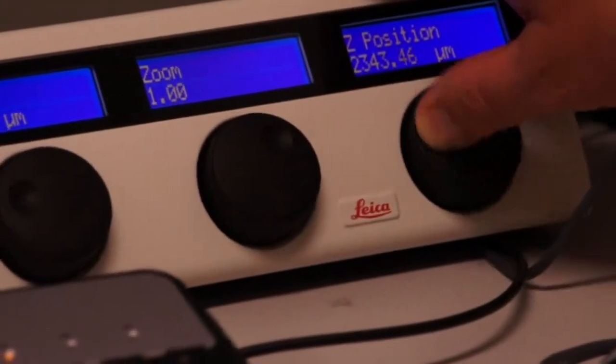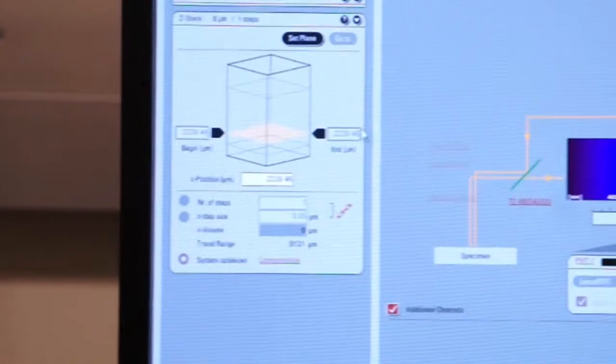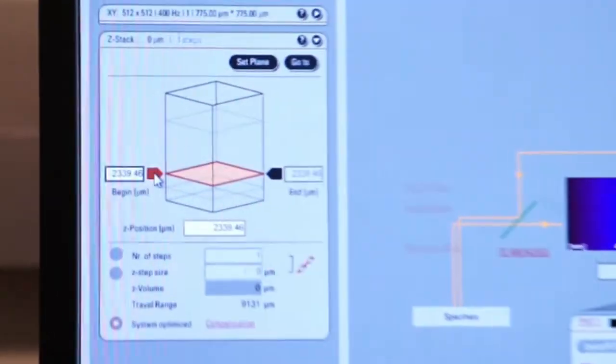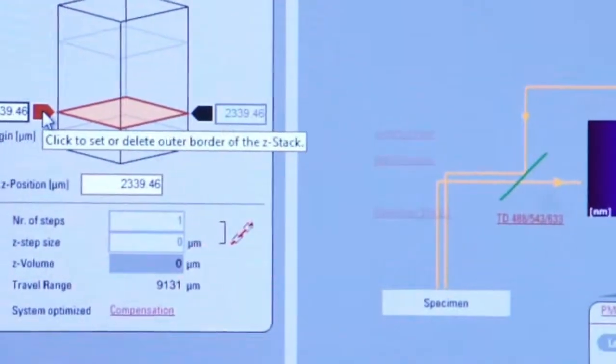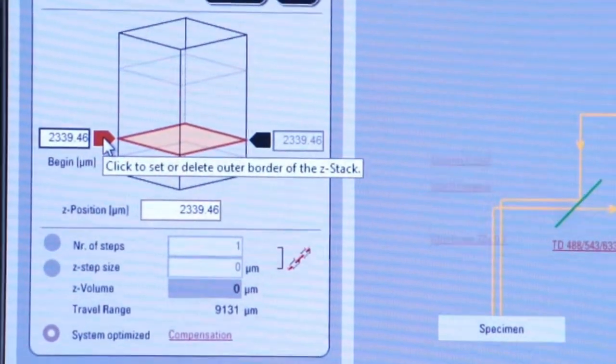And now I'm going to manipulate the Z-position knob on the smart bar to select the point that's out of focus, beyond the focus, underneath where I want to begin. That looks like a good position to begin. So we'll come over back to the Z-Stack. We'll click on the black arrowhead for begin, and we'll tell the system that is where we're going to begin our Z-Stack.